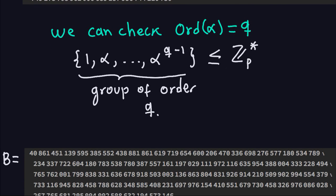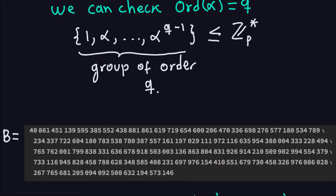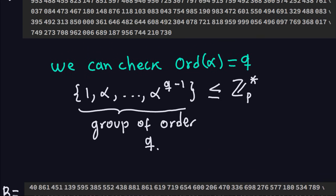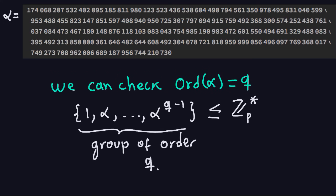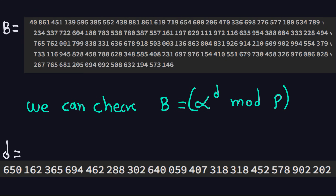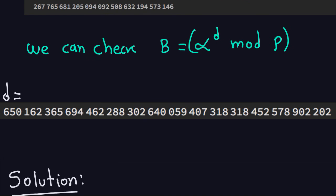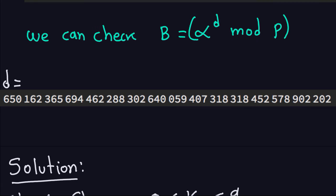B is computed as Alpha to the private key modulo P — also given by Java. The private key D is a large number that Bob keeps secret. P, Q, Alpha, and B together form the public key. We can verify that B equals Alpha to D modulo P even when the numbers are huge.